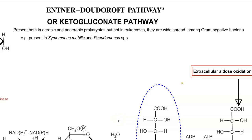In this screencast video lecture, we will look at the Entner-Doudoroff pathway, which is also referred to as the Keto-Gluconate pathway. This pathway is commonly present in aerobic as well as anaerobic groups of prokaryotes, but it is absent in eukaryotic organisms. Compared to Gram-positive, Gram-negative bacteria are found to widely have this pathway for glucose metabolism. Classical examples include Zymomonas mobilis and Pseudomonas species.